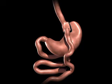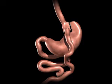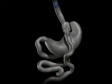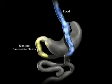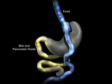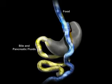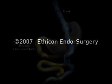Bypassing a portion of the small intestine decreases the absorption of calories and nutrients. The upper portion of the small intestine is reconnected to the lower portion of the intestine. The bile and pancreatic fluids from the liver and pancreas allow food to be completely digested.